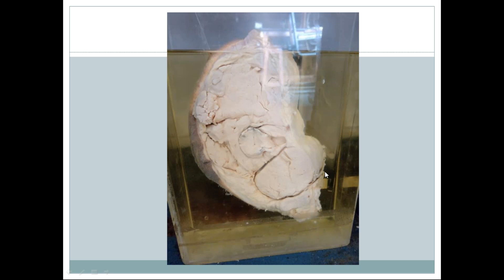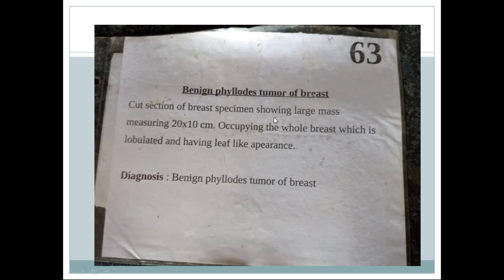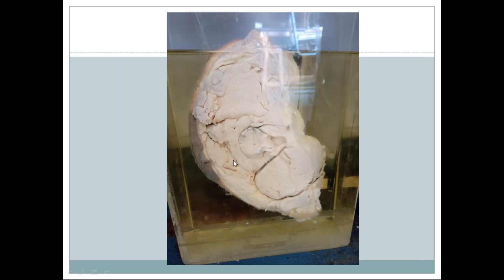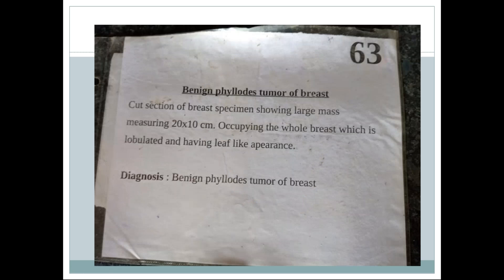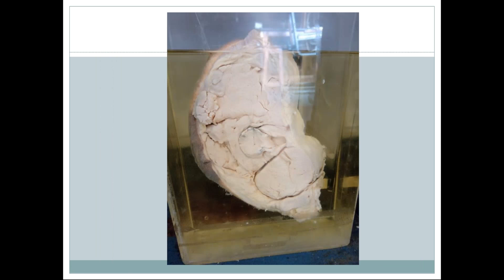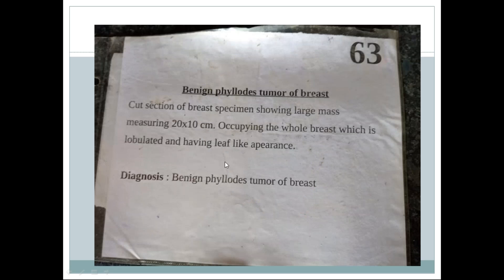Areas of necrosis can also be seen on cut section. This is a cut section of a breast specimen showing a large mass measuring 20 by 10 centimeters, occupying the whole breast. It is lobulated with a leaf-like pattern with areas of necrosis. Diagnosis: benign phyllodes tumor of breast.